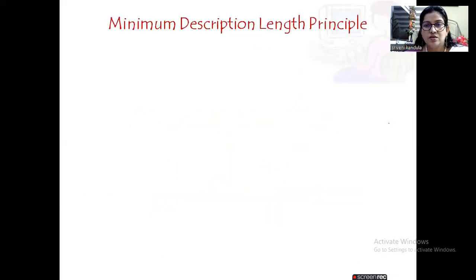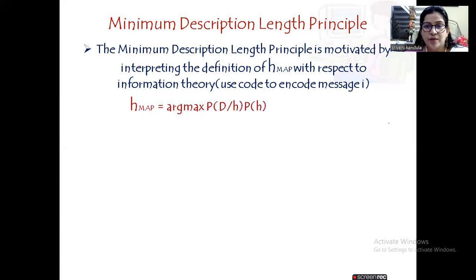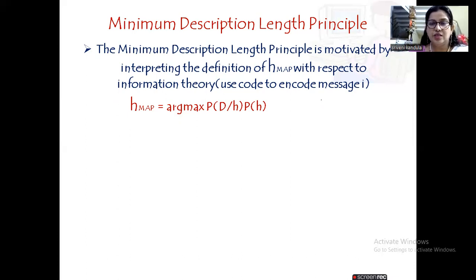This Minimum Description Length principle is motivated by the definition of H-MAP. We will be interpreting this with respect to information theory. The definition of H-MAP is: argmax of P(D|H) multiplied by P(H). We have seen this when we discussed Bayes' theorem, and now we want to apply information theory to it.